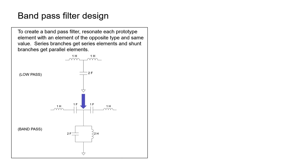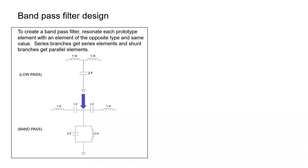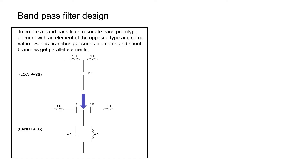What if you wanted a bandpass filter instead? To convert a low-pass filter into a bandpass filter, you simply need to add a partner for every circuit element in your prototype. Every inductor gets a capacitor, and every capacitor gets an inductor. That means a 3-pole low-pass filter becomes a 6-pole bandpass filter, because you double the number of reactive elements. The prototype value of the partner element is the same as that of the original. For example, a 1 Henry inductor remains 1 Henry in the bandpass prototype and its partner capacitor also has a prototype value of 1. For our capacitor that started at 2 Farads, that value remains and the partner inductor also has a value of 2 Henrys.